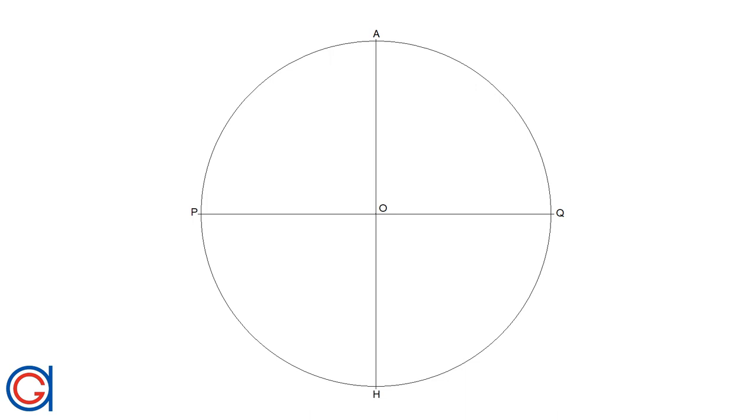The next step is to set our compass on point H and with a radius HO we are going to scribe an arc which cuts our circumference at two new points which we will call point R and point S as can be seen here.